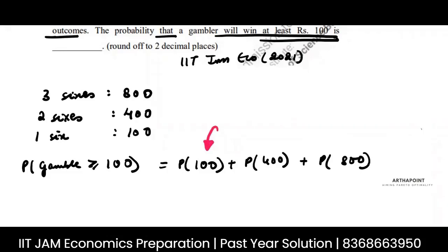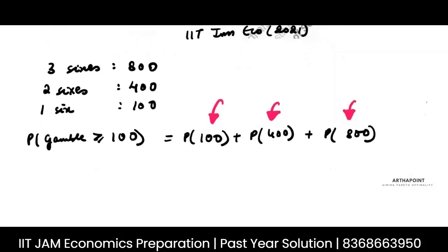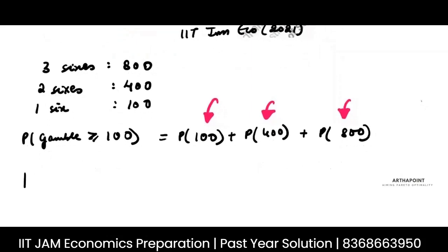These are the only three options. Either he will get one six, so he will earn exactly 100, or he will get two sixes and earn 400, or he will get three sixes and earn 800. Now what is the probability that there is going to be one six?